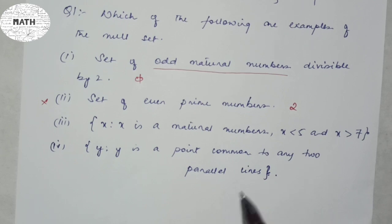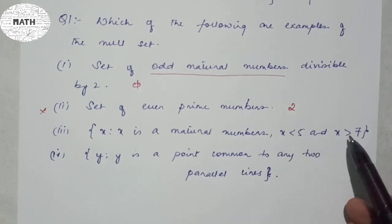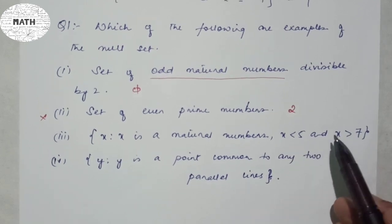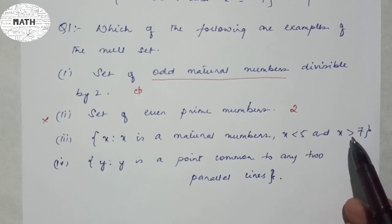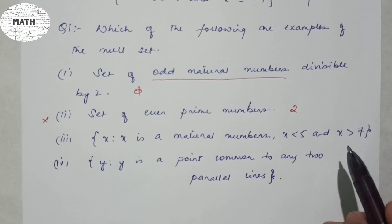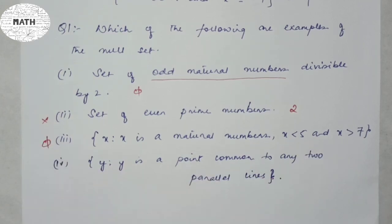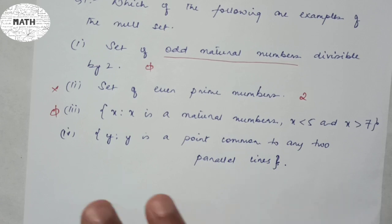Number three: x is a natural number, x less than five and x greater than seven. A number cannot simultaneously be less than five and greater than seven, so this is also a null set. I want you to do number four in the comment section.